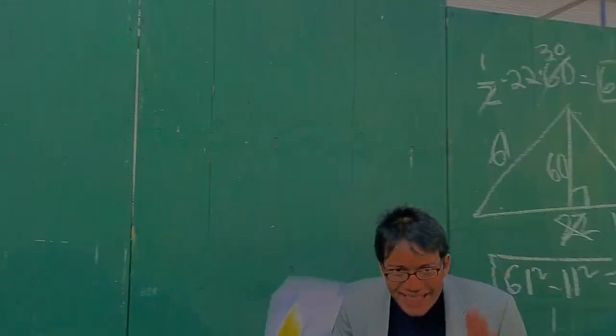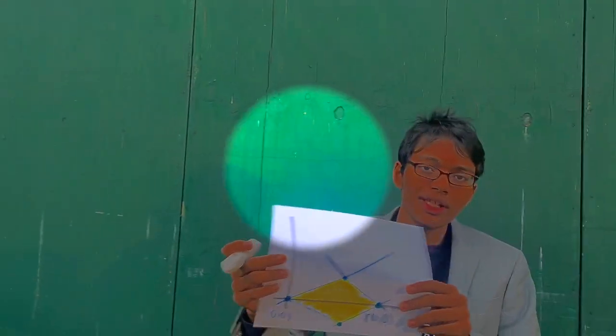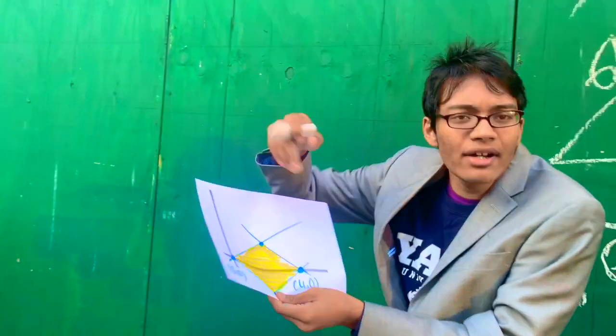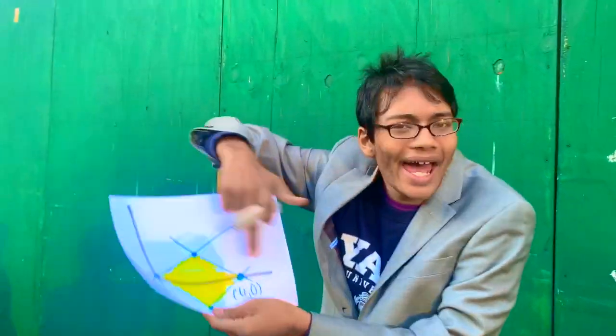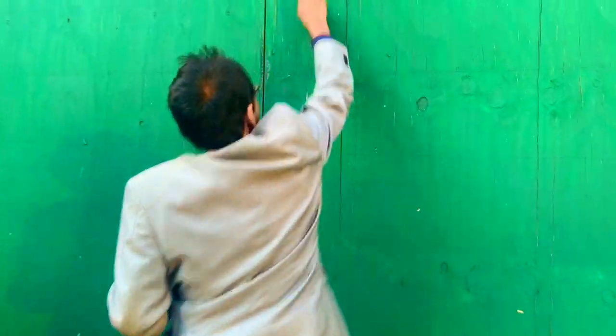All right, so today we're going to be taking a look at yet another geometry problem. We have to find the area of the smallest square that passes through the following two points: the origin (0,0) and (4,0).